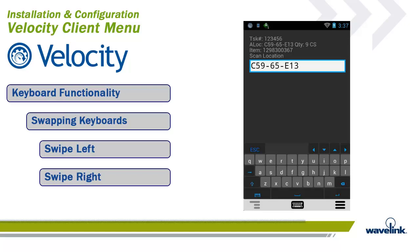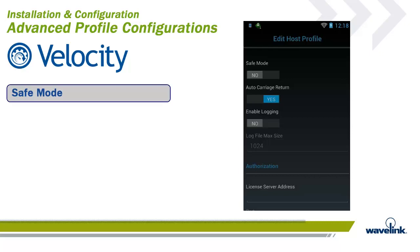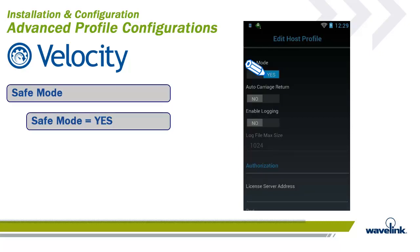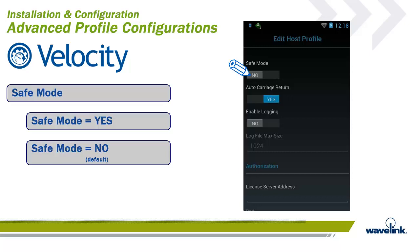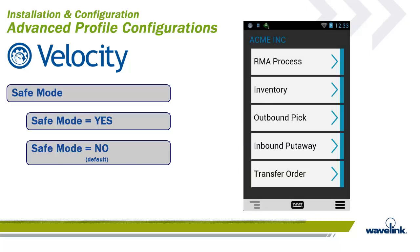It is possible to manually configure a host profile directly on the client, as seen in the basic configuration options module. While this is not considered best practice, and Wavelink recommends that all host profiles be configured with the Velocity console, it is important to understand the advanced host profile configurations. Starting with Safe Mode: if the Safe Mode toggle is set to Yes, the screen will run in traditional black and green screen mode. If set to No, the Velocity client will utilize its built-in HTML reader to use themes created within the Velocity console and present screens with updated screen layouts and styles.